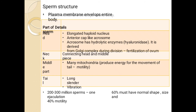The neck is connected with the head and the middle piece. The middle part consists of many mitochondria which produce energy for the movement of the tail. The tail is a long cylinder and through vibration it will move. 200 to 300 million sperms are formed at the time of ejaculation, in which 40% is motile and 60% is of normal shape and size.